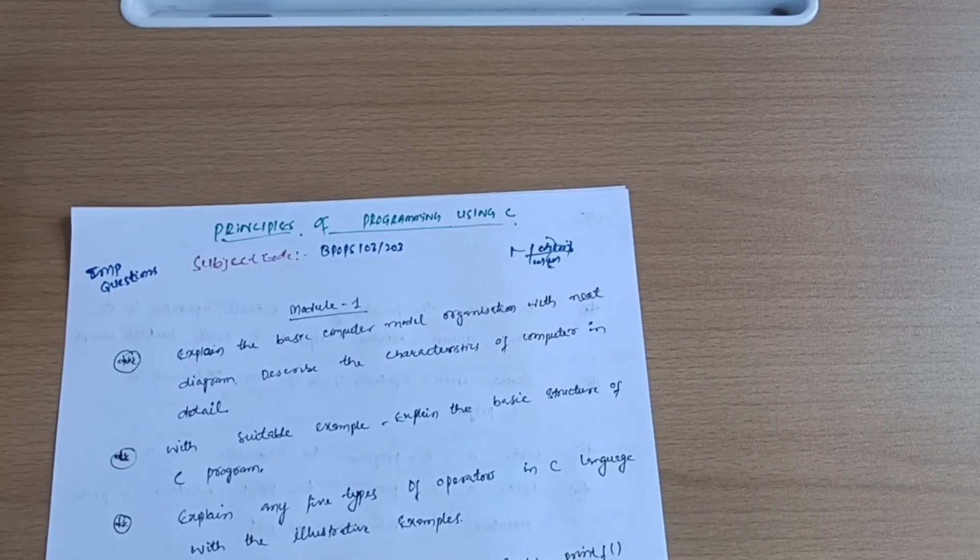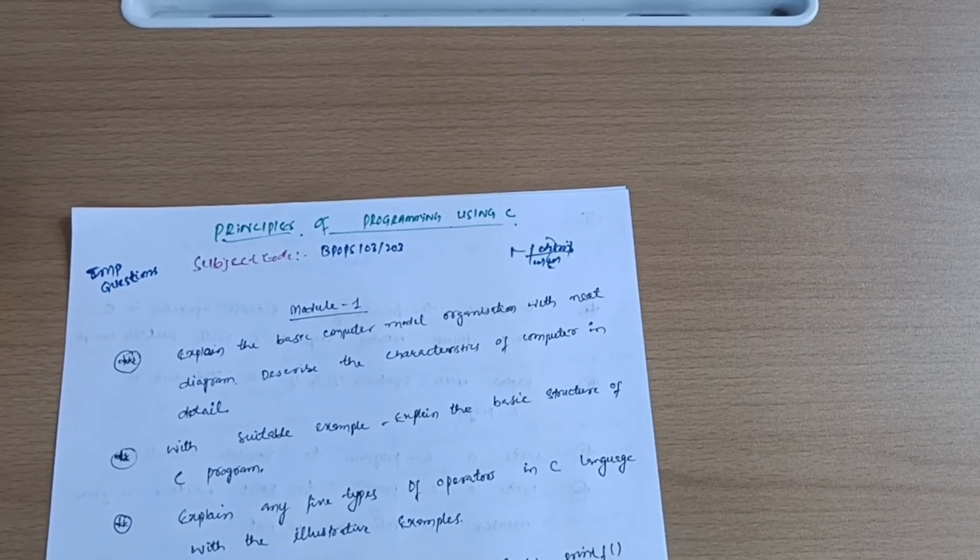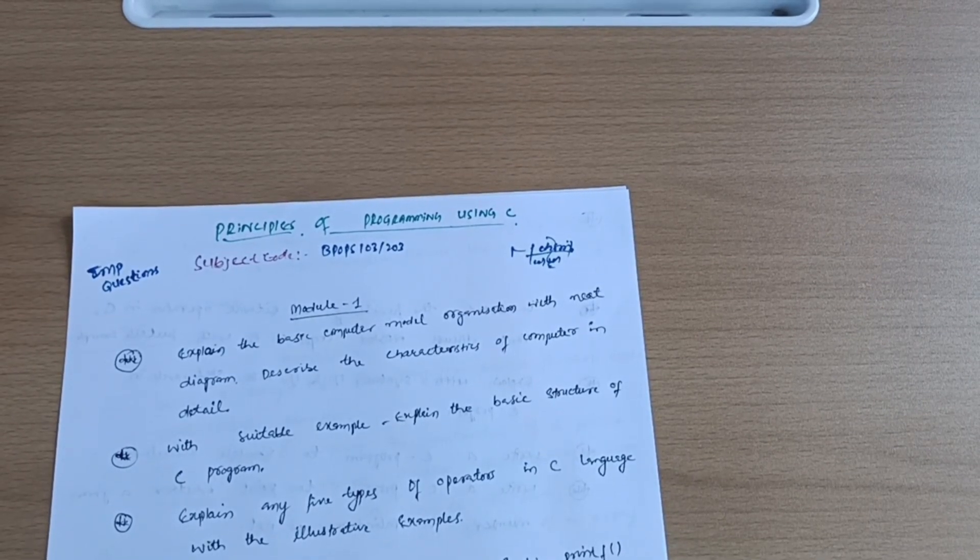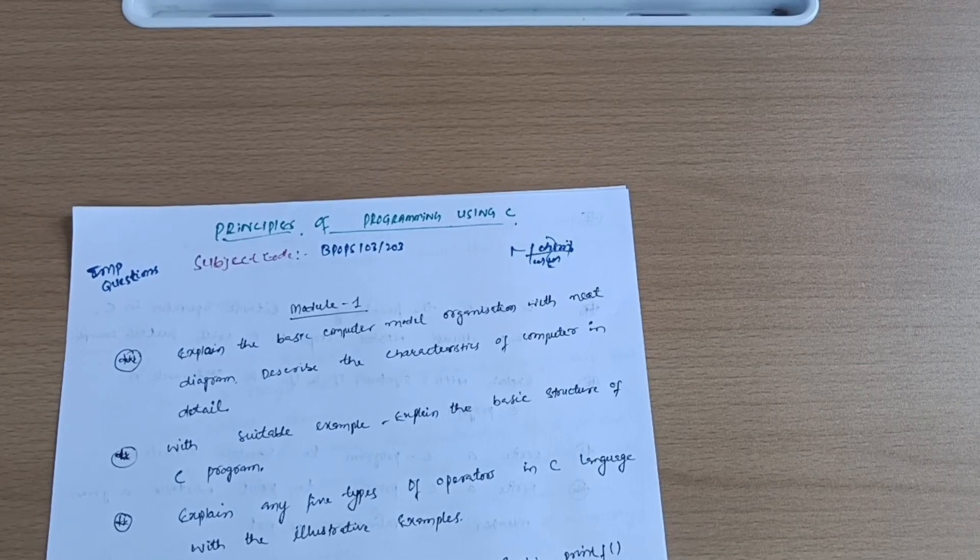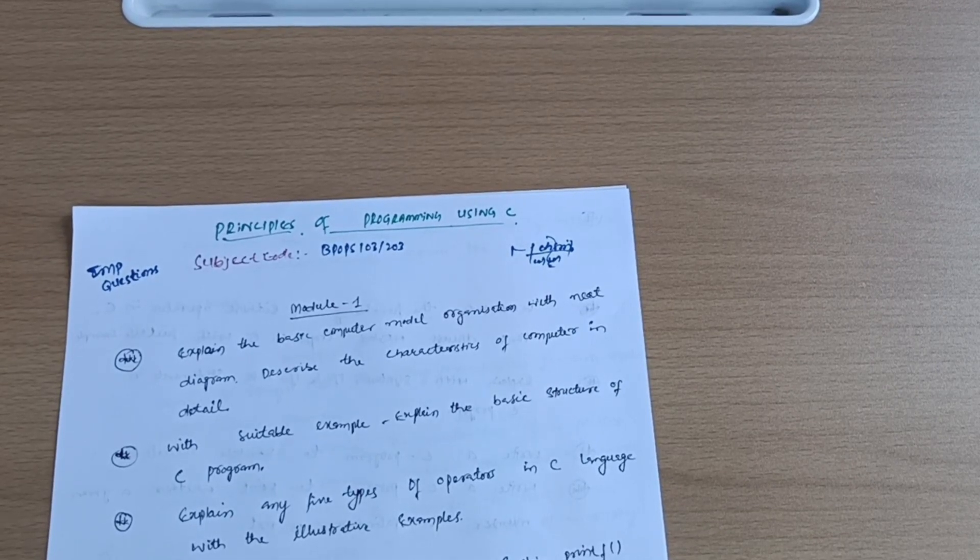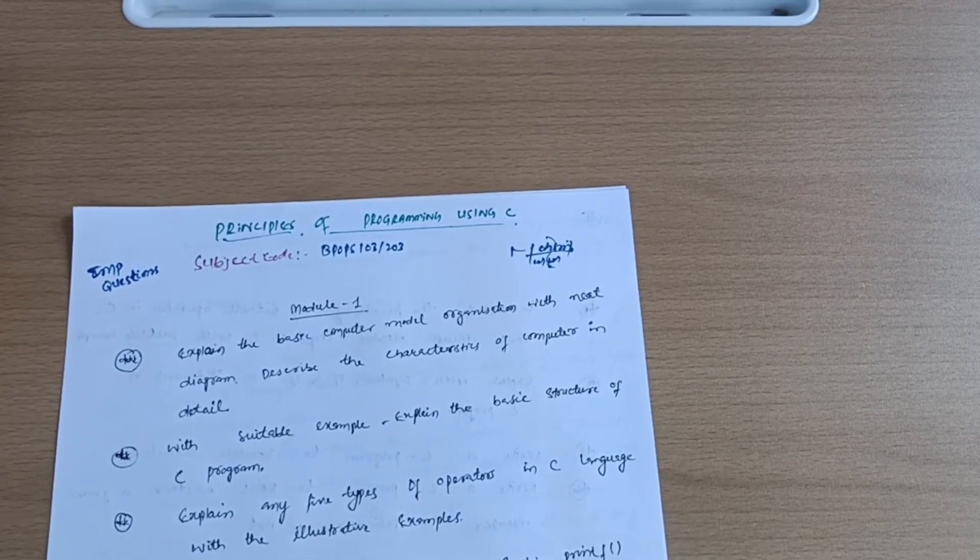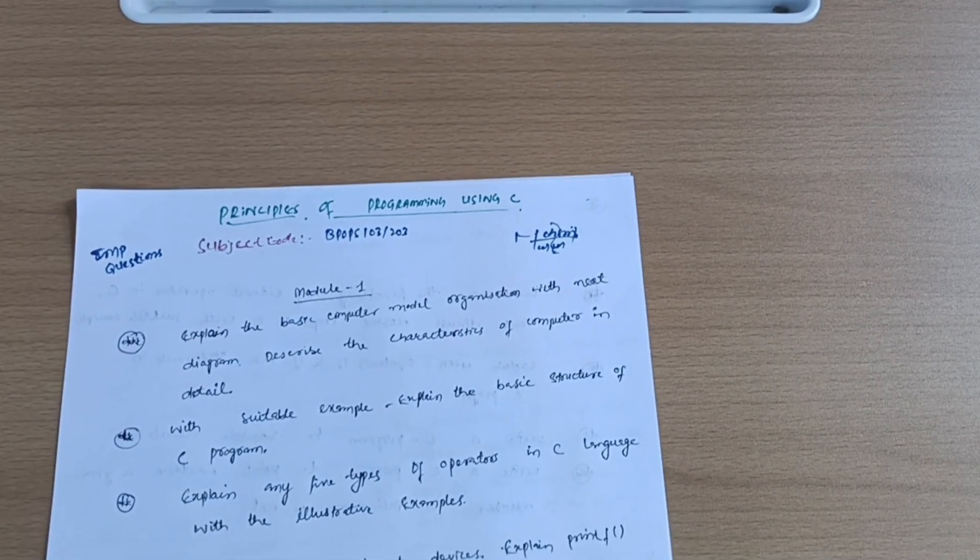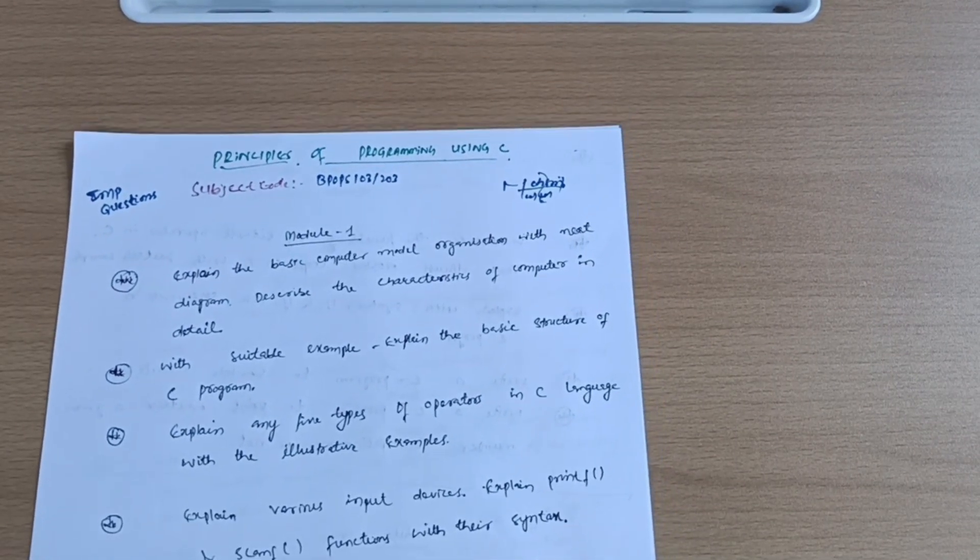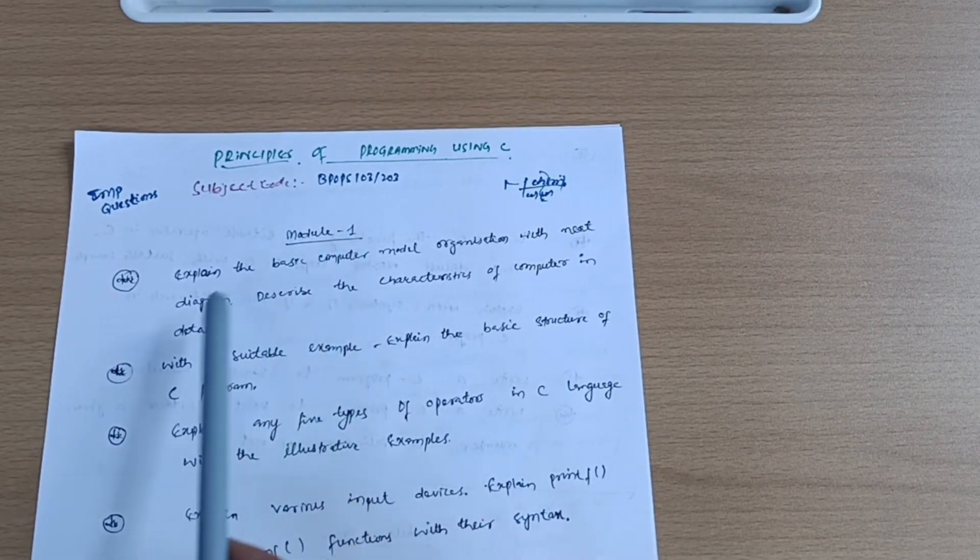But in programming subjects it is not possible to read three modules fully just because you cannot predict the programs. If you refer to previous year question papers and model question papers, you will not find repeating programs. That is very rare in programming subjects. So better to go for each and every module and take some important questions which I will discuss here.